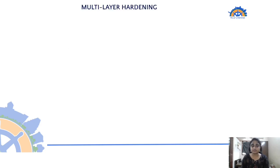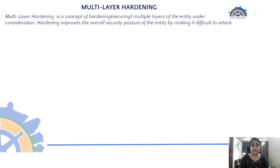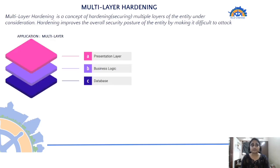Starting with what is multi-layer hardening: it's a concept of securing multiple layers of entities under consideration. An entity could be an application, a database, an infrastructure, or a Kubernetes cluster. You identify all the layers in the entity and harden or secure them. The purpose of hardening is to improve the overall security posture of the entity and make it difficult for an attacker to gain control. Hardening doesn't guarantee 100% security — it just makes it harder for attackers.